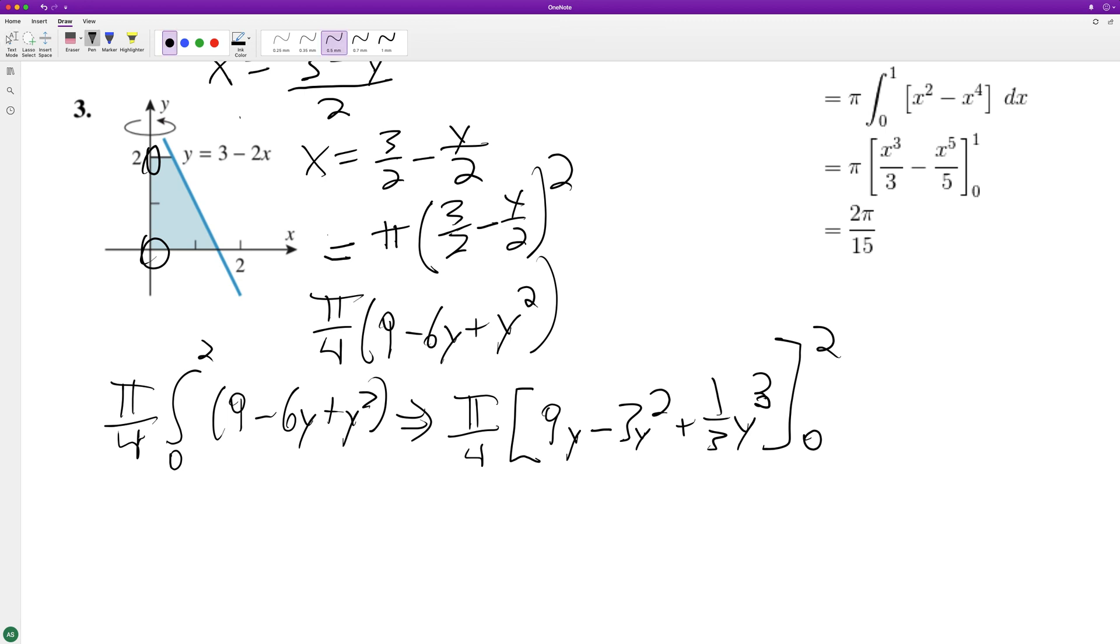The nice thing about zero is we only have to subtract it because everything in this is zero when we plug in zero. So we have pi over four. And we have 18 minus, 3 times 4 minus 12 plus 8 over 3.